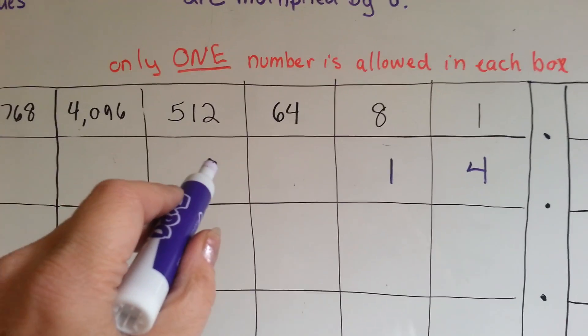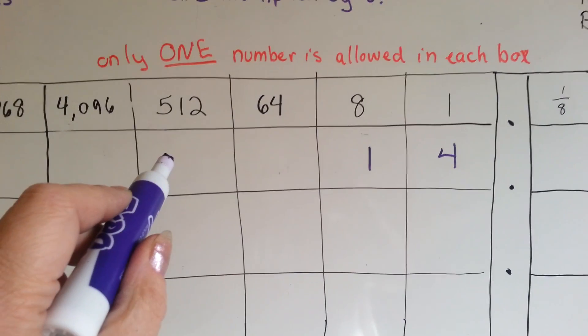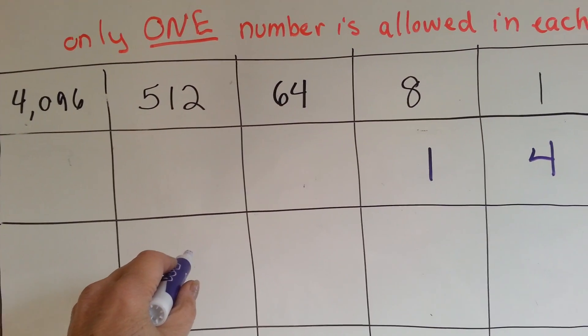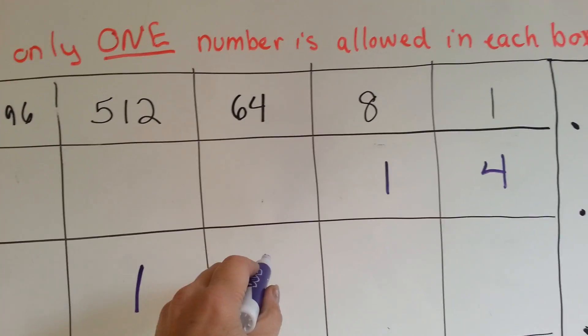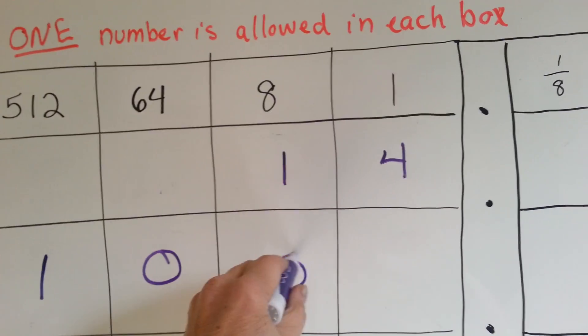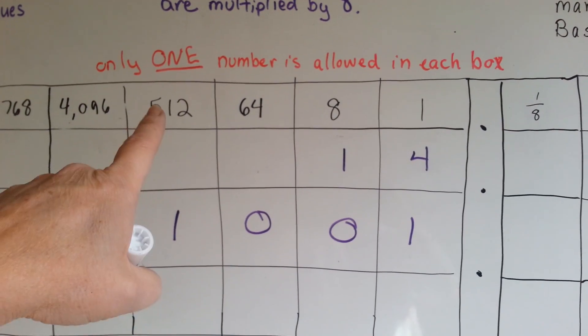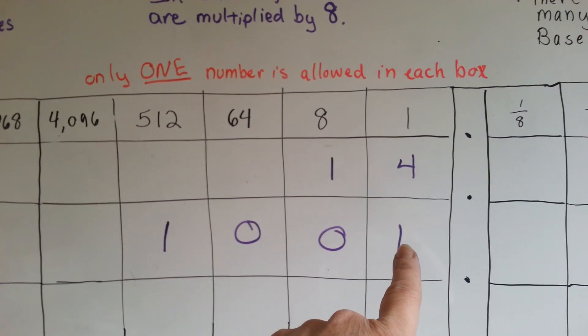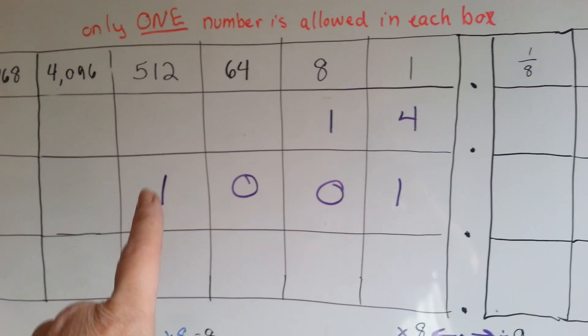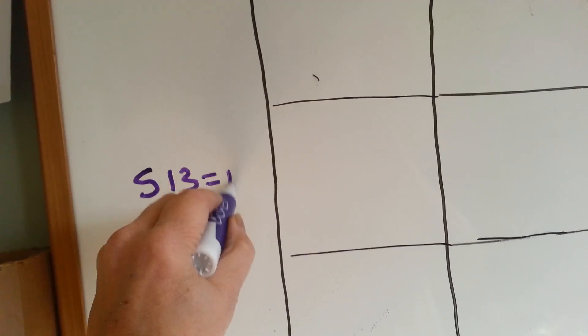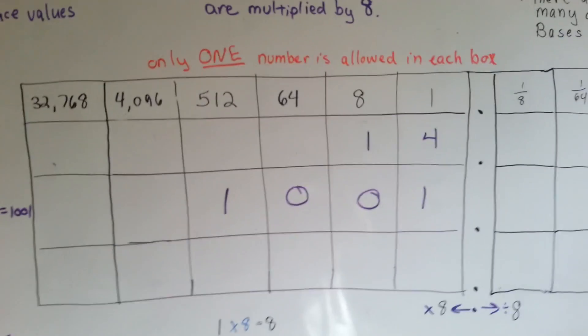Let's say you had the number five hundred and thirteen. What you would do is put a one here for five twelve, no sixty-fours, no eights, but a one. Because you've got five hundred and thirteen, you get five hundred and twelve plus one more. So to say five hundred and thirteen, you say a thousand one. Five thirteen would equal one zero zero one in base eight. See how that works?